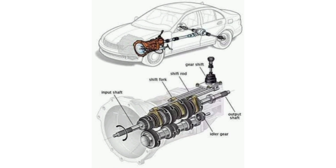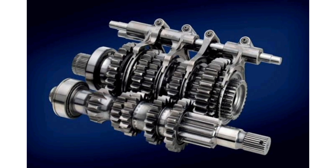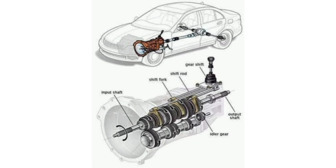The functions of the transmission system include: transmitting engine power to the wheels, controlling the speed and direction of the vehicle, providing variable gear ratios for different driving conditions, enabling smooth acceleration and deceleration, allowing the vehicle to come to a complete stop without stalling the engine, facilitating efficient power delivery and fuel economy, adapting to changes in terrain and road conditions, enhancing driving comfort and convenience, enabling reverse gear for backing up, and transferring engine torque to the wheels for propulsion.